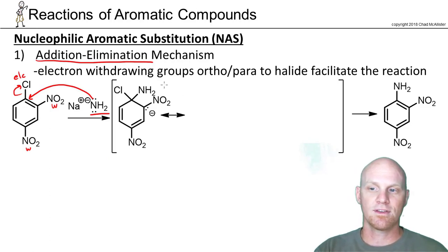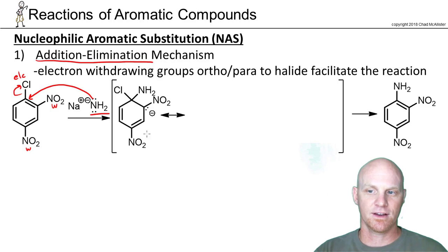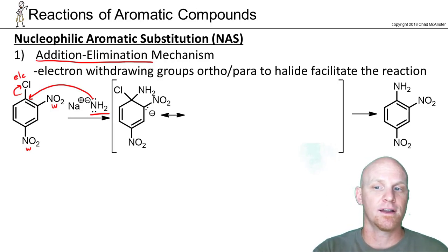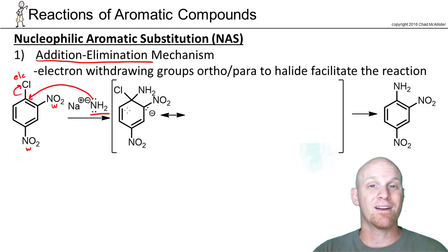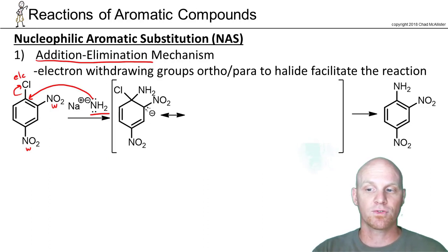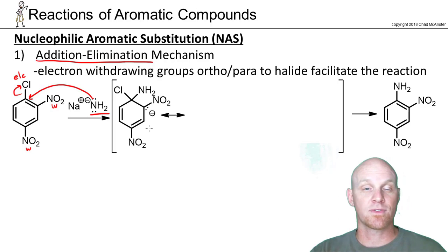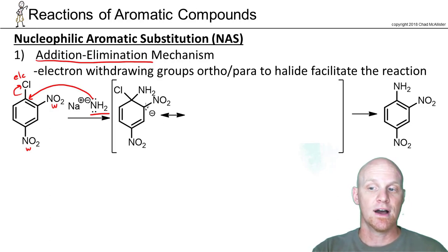Those electron-withdrawing groups will have a stabilizing effect on the intermediate. We're going to get a lovely anionic intermediate, and because it's anionic, that's why electron-withdrawing groups stabilize it. Those withdrawing groups need to be ortho and para because those are the carbons that are going to share the negative charge. I want to show that this really is just two steps — addition and then elimination — where elimination is where we form a pi bond and kick off the leaving group.